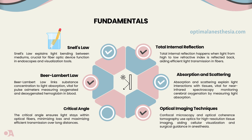Critical angle and total internal reflection are like the backbone of optical fibers. The critical angle is the angle at which light is reflected back inside the fiber, ensuring efficient transmission over long distances without losing intensity. Total internal reflection is the phenomenon where light traveling from a higher to a lower refractive index medium is reflected back, ensuring efficient transmission in optical fibers.